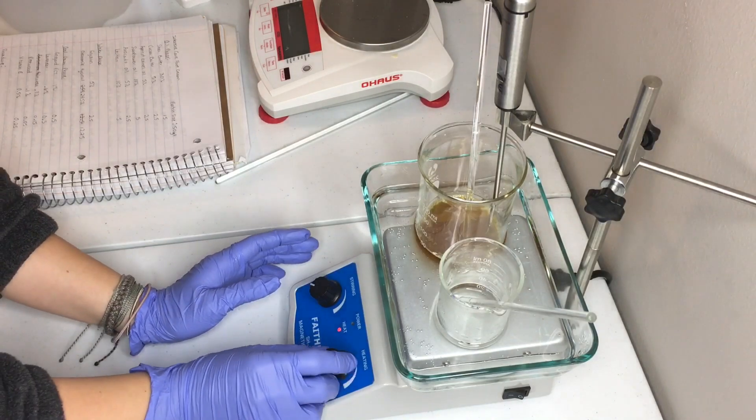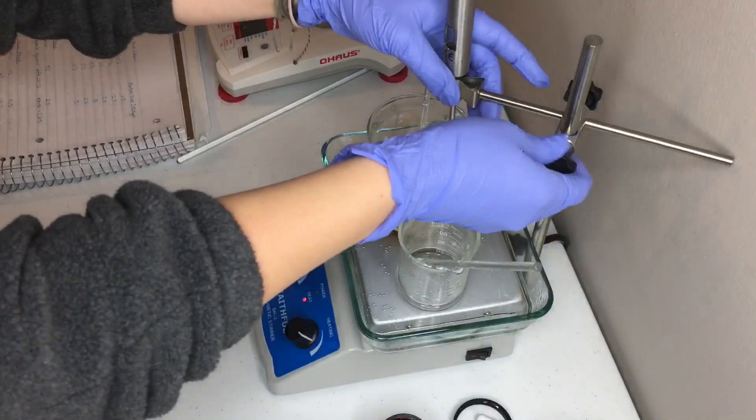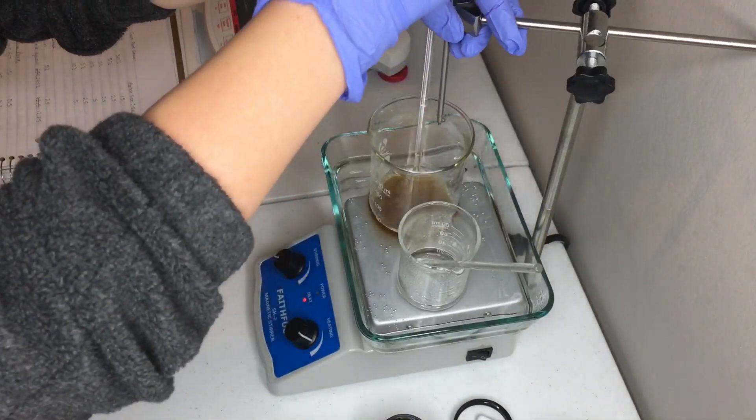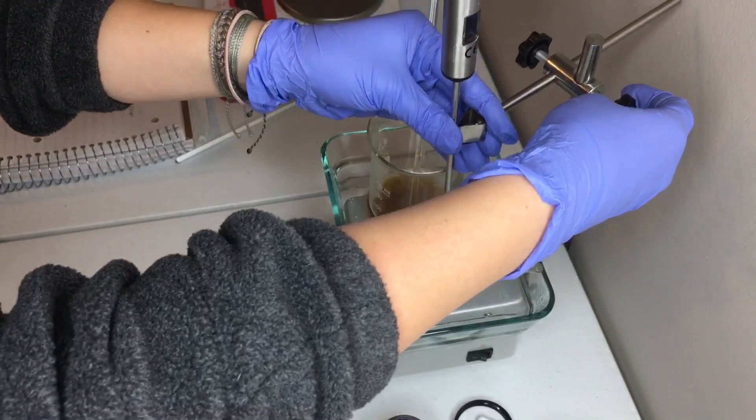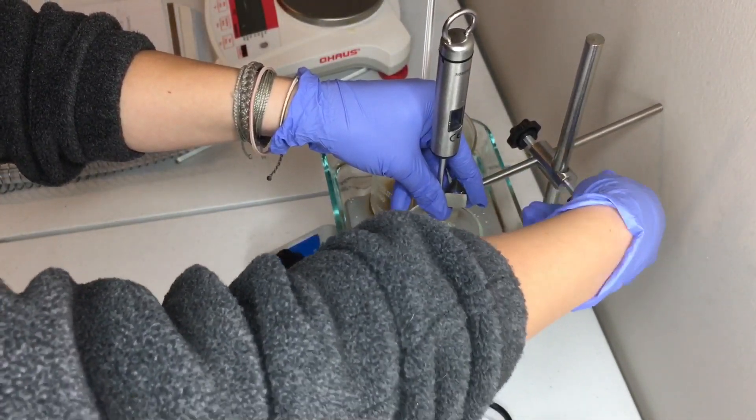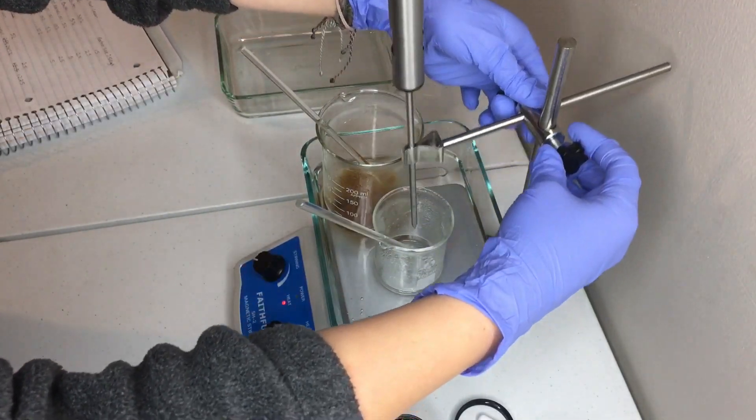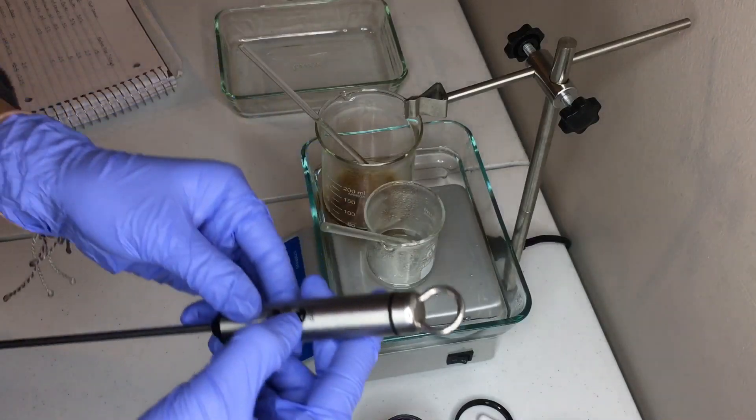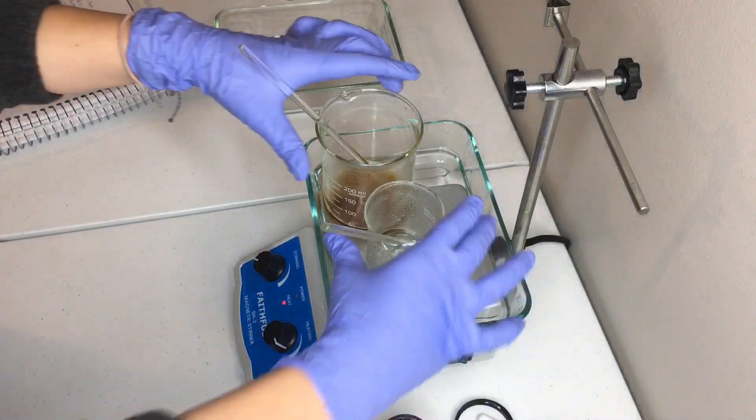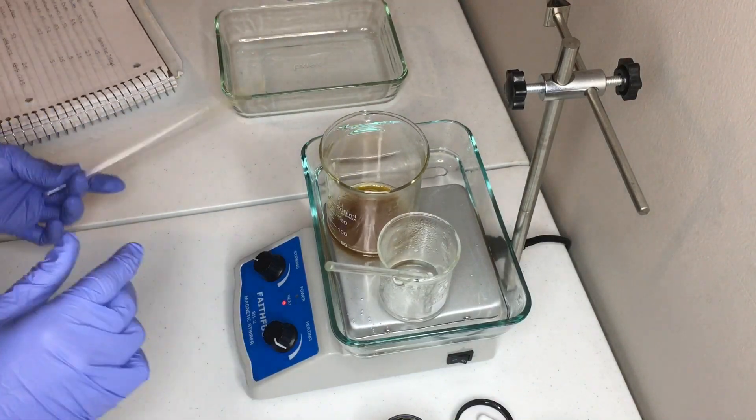And this is where I add my thermometer into the beakers so that I can gauge the temperature. So now that they've reached 70 degrees Celsius, I'm going to go ahead and get ready to mix them together. And we're going to trickle the water phase into the oil phase.